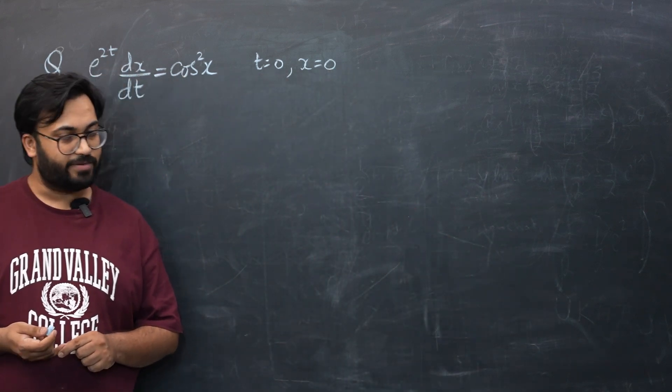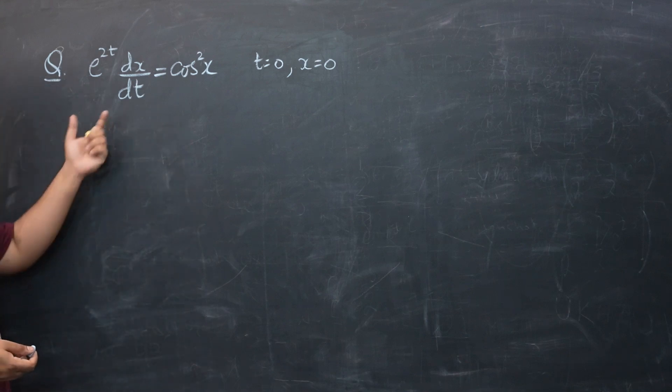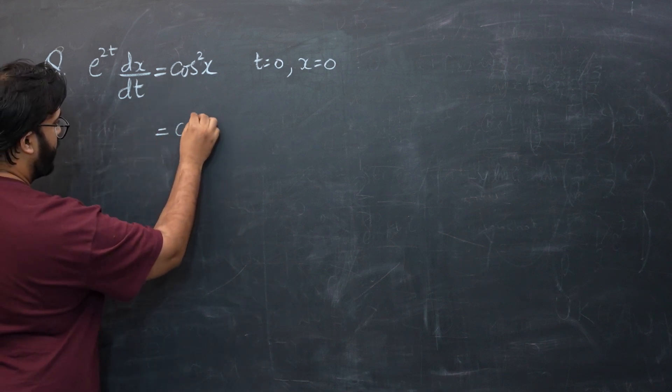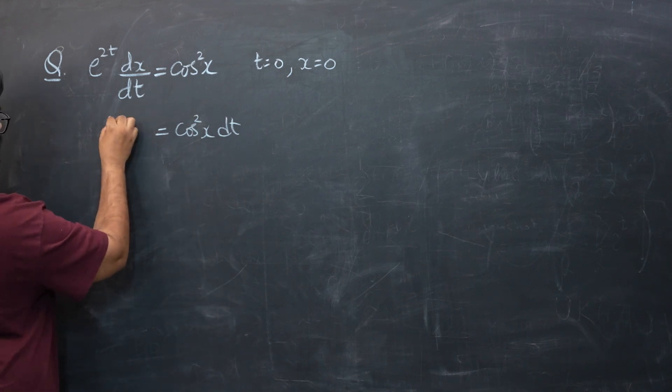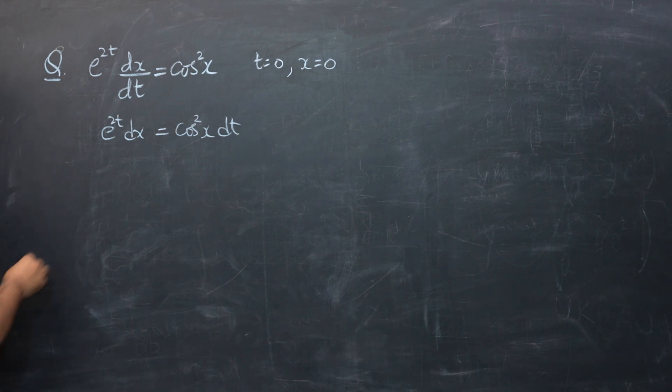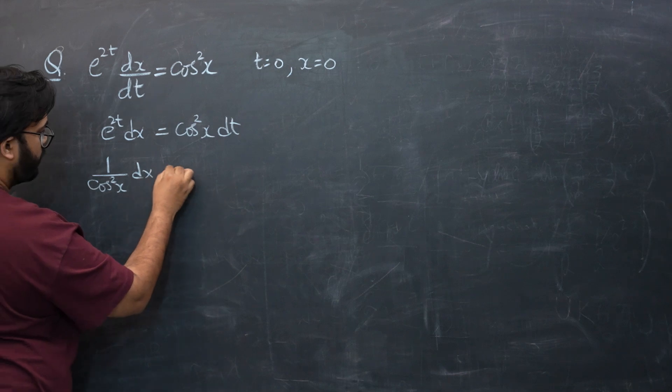For those of you who have tried the question, I know the last two parts will create a little bit of trouble, but let's first start with the differential equation part. First of all, let's do the separation of variables. That is pretty straightforward here and you will have cos²x dt = e^(2t) dx. Now we know both of the terms are in their wrong place, so I'm going to replace them. So 1/cos²x dx will be equal to 1/e^(2t) dt.